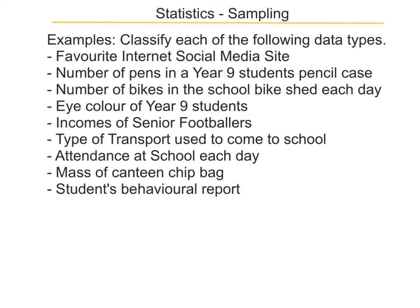Here are some examples of some data being collected — let's see what sort they are. For the first one, we've got favourite internet social media sites. They're not a number; they're a category because they're a type of site, so that's categorical. And there is no order inferred, so it's nominal. The next one — the number of pens in a Year 9 student's pencil case — that's numerical because the number of pens is a number, and it's discrete because we won't be having half pens. The number of bikes in the bike shed each day is also numerical and discrete because we don't have half bikes.